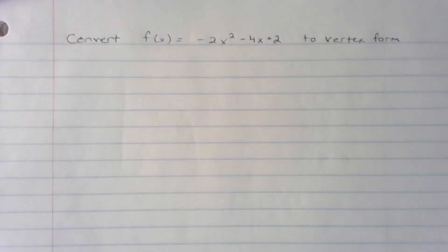In this video, we're going to convert the quadratic negative 2x squared minus 4x plus 2 to vertex form.